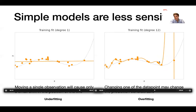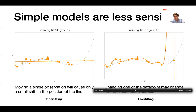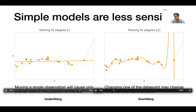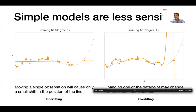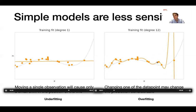On the other hand, for a very complex model that follows observations very closely, we observe high variance: if we slightly change one point, the estimate — the prediction function — changes considerably. When overfitting, each small change in the training points forces the model to change a lot.